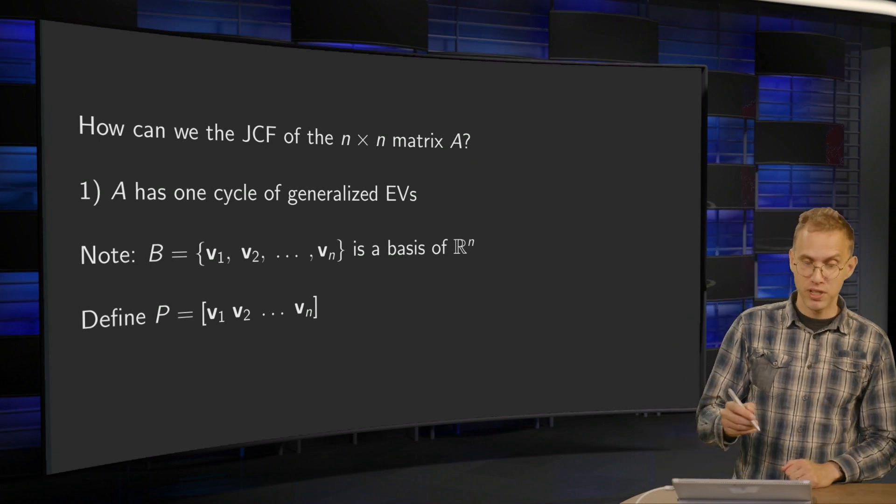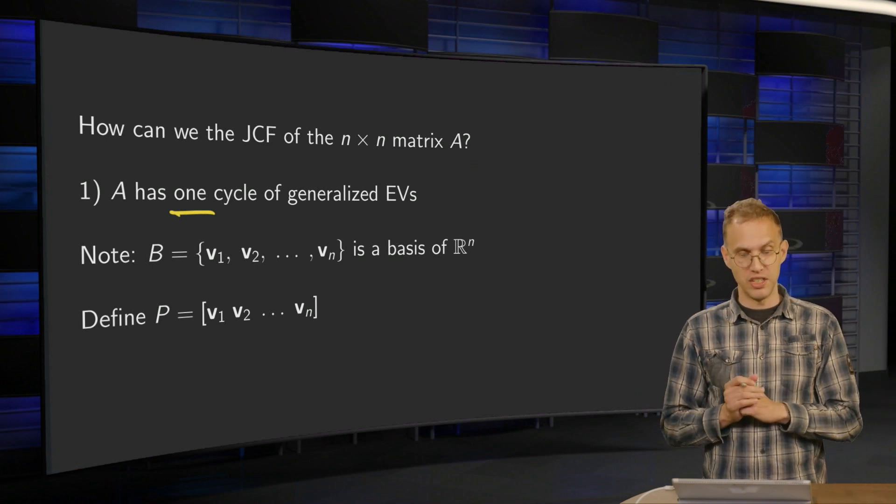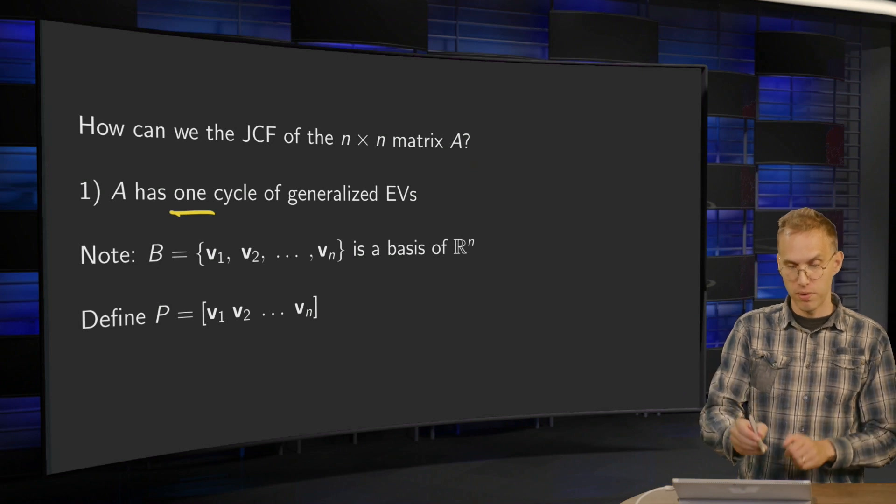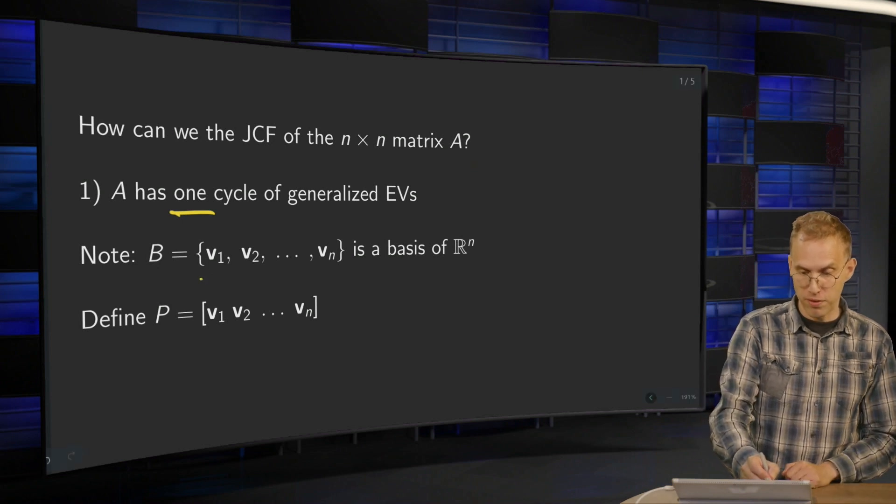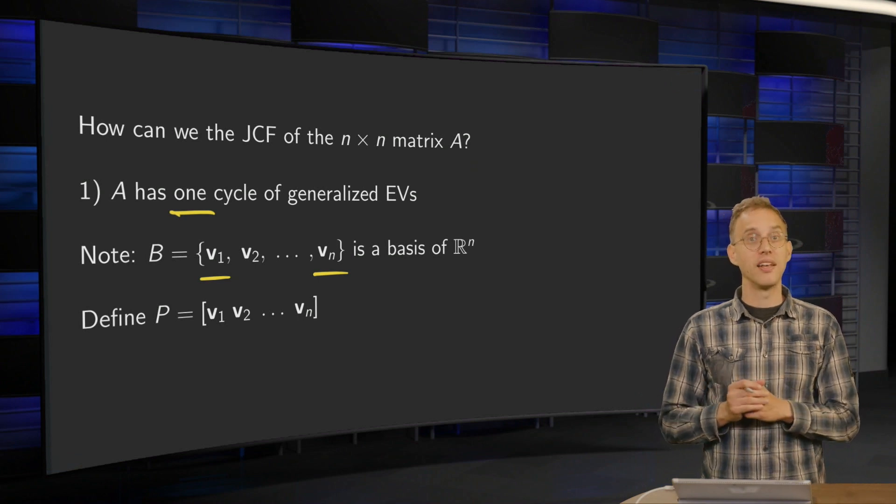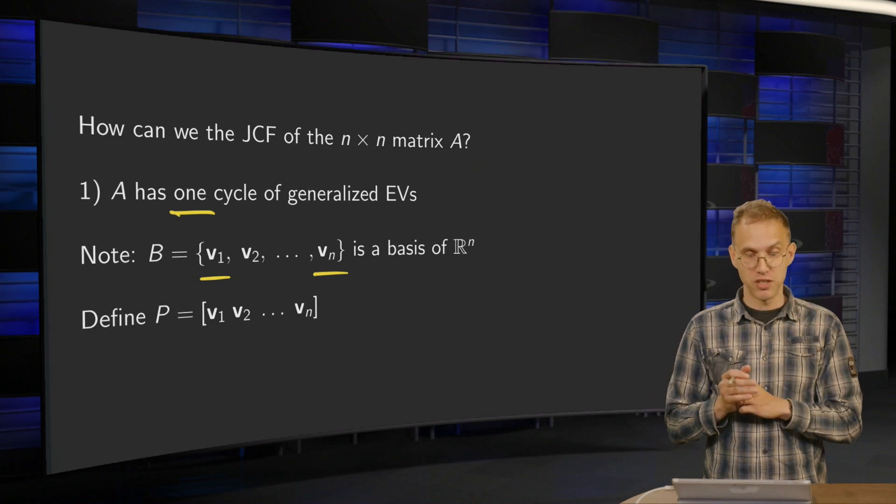Suppose first that A has one cycle of generalized eigenvectors. We have some cycle from V1 up to Vn, V1, V2 up to Vn. We note these are all independent, so this will be a basis of R^n.